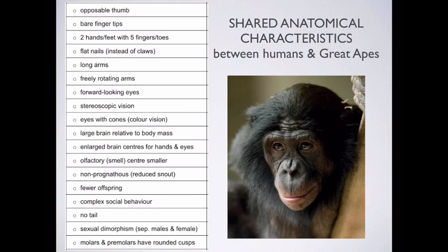One of Darwin's observations was that many more offspring are born than survive to maturity. When you look at the great ape species, we don't give birth to lots of young. We're not like fish who lay millions of eggs in the hopes that one or two might survive. Instead we give birth to one individual at a time. Sometimes we might have twins, more rarely triplets — more than triplets involves some sort of artificial intervention. So we tend to have fewer offspring.